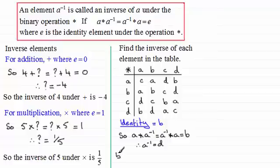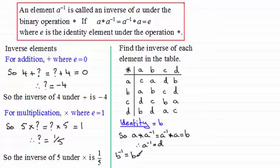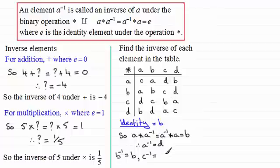Let's look at the inverse of B. What do you need to combine B with to get back B? From the table it is in fact B itself — B combined with B gives B. This is a result that is always true: the inverse of the identity element is the identity element itself. It's what we call a self-inverse. When we look at the inverse of C, C combined with something gives us the identity element B. Again we've got a self-inverse: C combined with C gives B. So the inverse of C is C — a self-inverse.